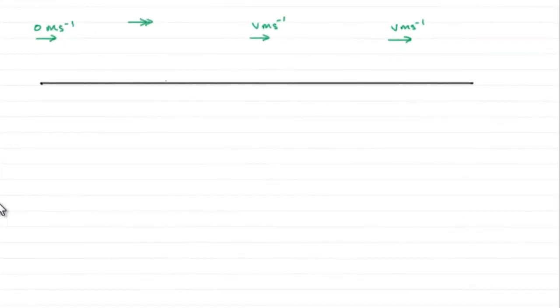Now for this question, I'll sketch a diagram. We're told that this cyclist has a mass of 120 kilograms, so I'll mark that in as 120 kg.